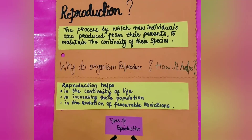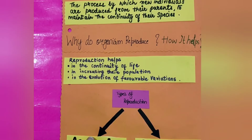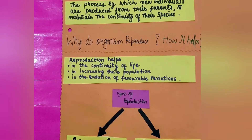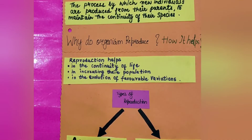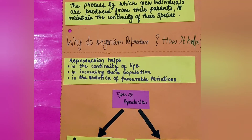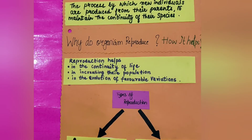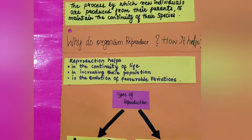Why do organisms reproduce? How does this really help? Reproduction helps in the continuity of life, as discussed, and it increases the population of the species. Very importantly, we have seen the evolution of favorable variations at times.